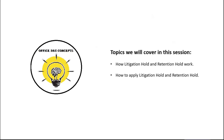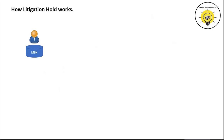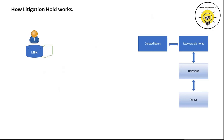Litigation hold is used to preserve the mailbox or the contents of the mailbox. Let's assume a user has a mailbox with certain emails. If a user deletes an email, that email goes to the Deleted Items folder, where it will stay for 30 days. If the user doesn't recover it within 30 days, that email moves to the Deletions folder, where it will be stored for 14 days. From the user's perspective, deleted emails go to Deleted Items and then to the Recoverable Items folder for 14 days.